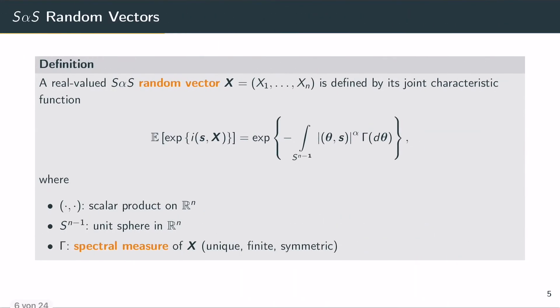A symmetric alpha stable random vector is defined by its joint characteristic function given here, where gamma is the spectral measure — a measure on the unit sphere — and it can be shown that it's unique, finite, and symmetric. I will not go into more details here; please take a look at Samorodnitsky and Taqqu's book for more details.